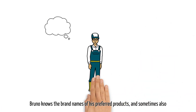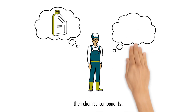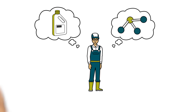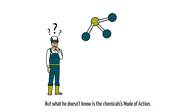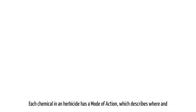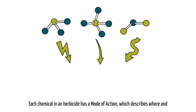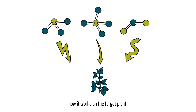Bruno knows the brand names of his preferred products and sometimes also their chemical components. But what he doesn't know is the chemical's mode of action. Each chemical in a herbicide has a mode of action which describes where and how it works on the target plant.